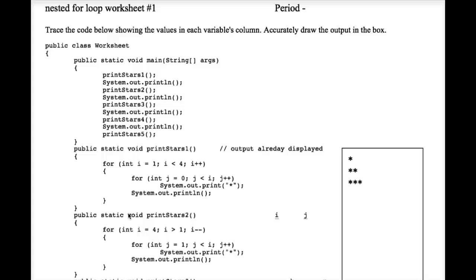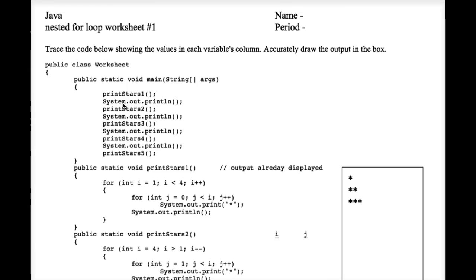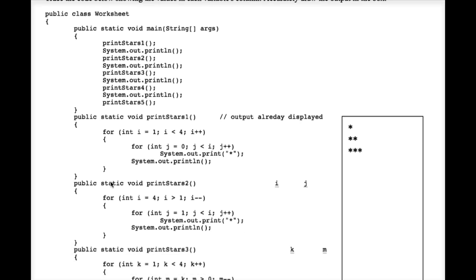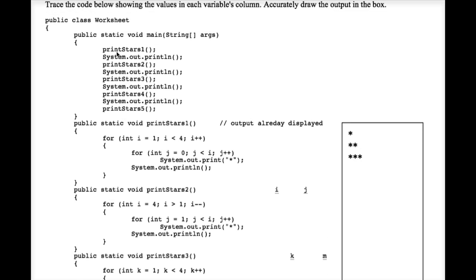Let's practice tracing double nested for loops. Here in this worksheet we have a main method that's essentially a bunch of call statements for static methods included in this client program. The first call statement is for print_stars_1. The execution moves from this call statement down to print_stars_1, which has a for loop using loop variable i initialized to 1. This method produces its output, so I'm not going to trace that.